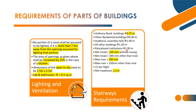Minimum tread of staircase without nosing is 250 mm for residential buildings. Other than residential buildings, minimum tread is 300 mm. Maximum riser for residential buildings: 190 mm. Other than residential buildings, like hospital buildings: 150 mm riser. Maximum risers per flight: 15. The headroom height of the flight of staircase is 2.2 meters. These are the stairways requirements.